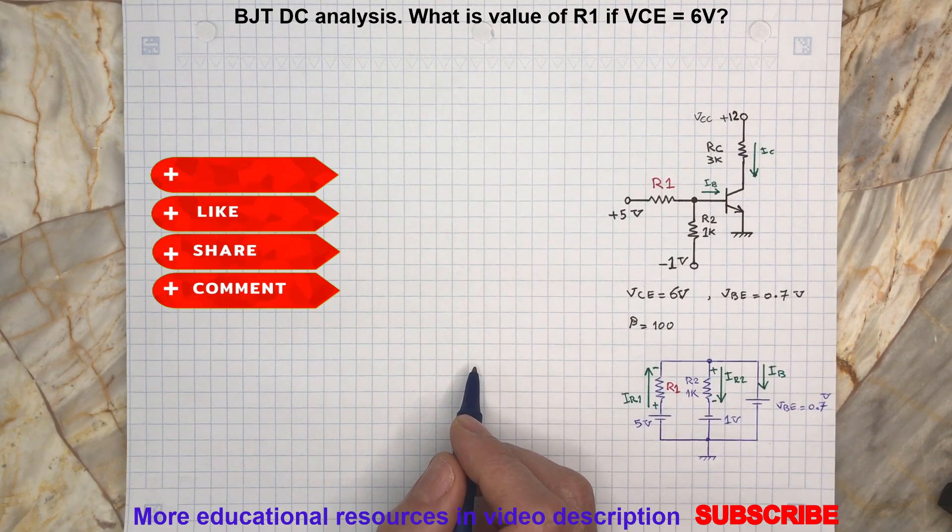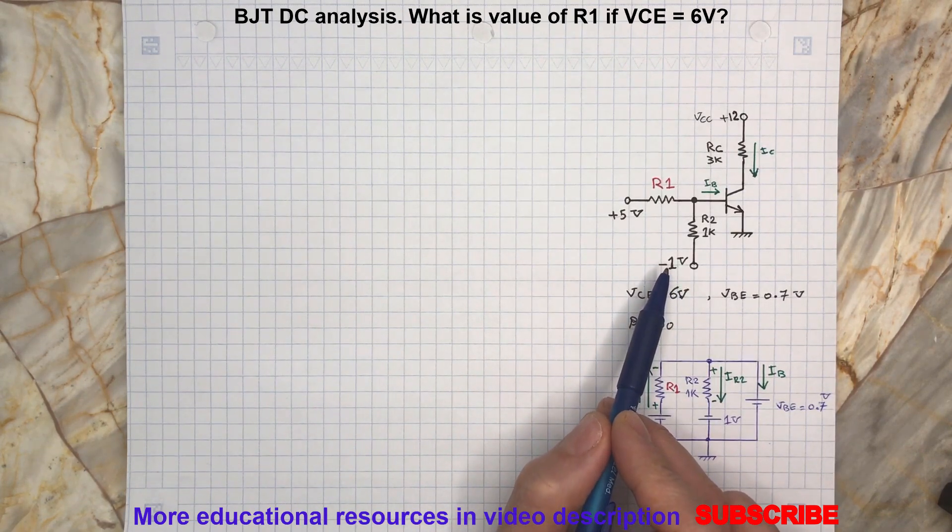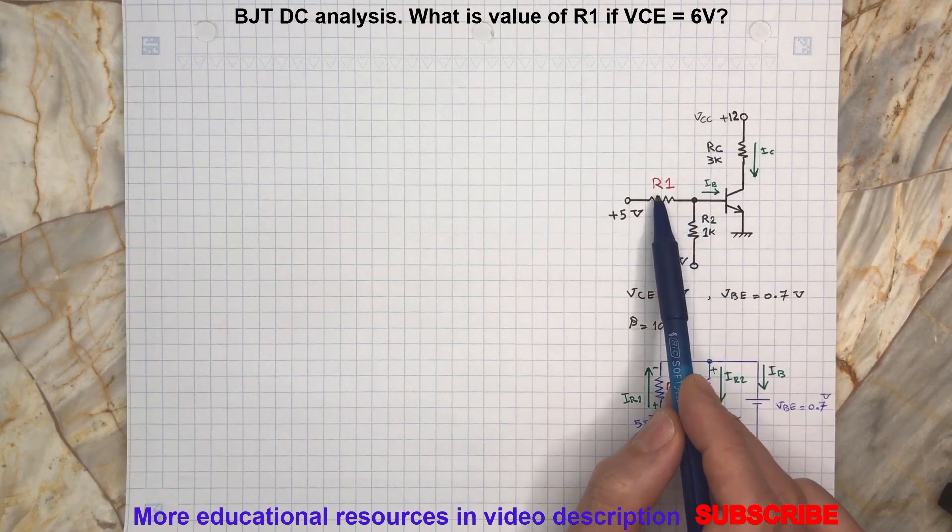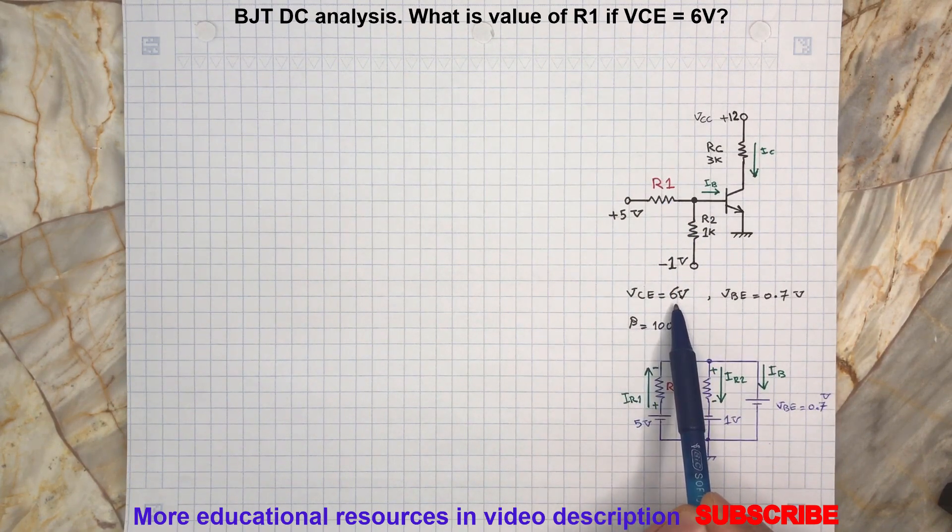Hello and welcome back to another video. Today we are going to review this BJT circuit and find the value of R1 while voltage collector to emitter is 6 volts.